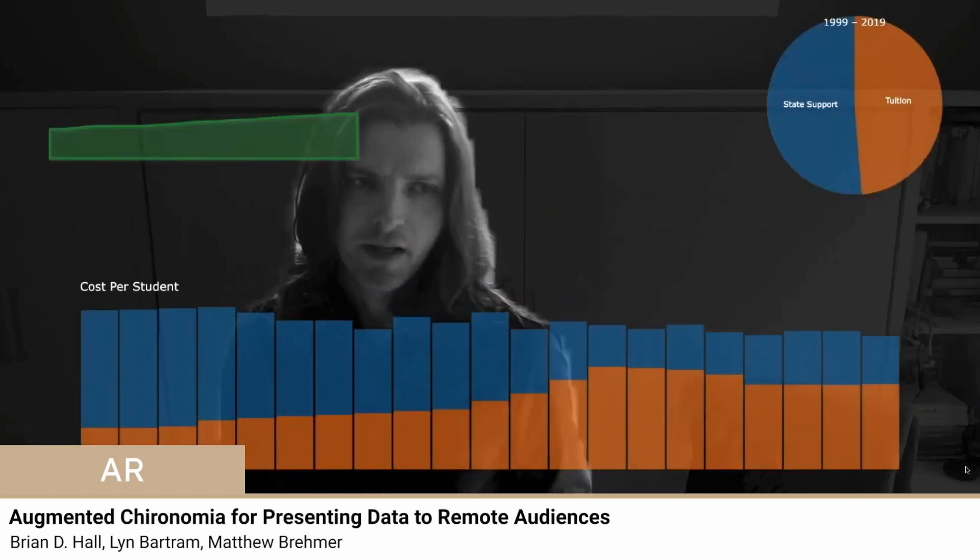A banner reads Augmented Kironomia for presenting data to remote audiences. A man with shoulder-length hair and beard stubble appears, and several colorful graphs change as he talks.